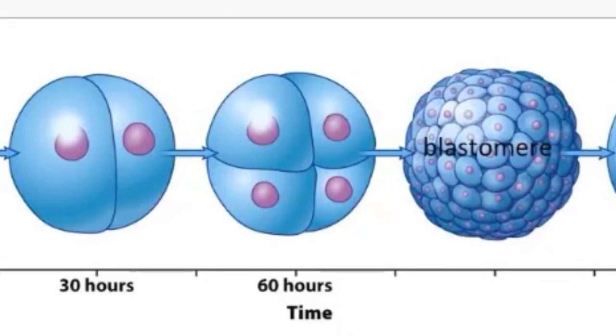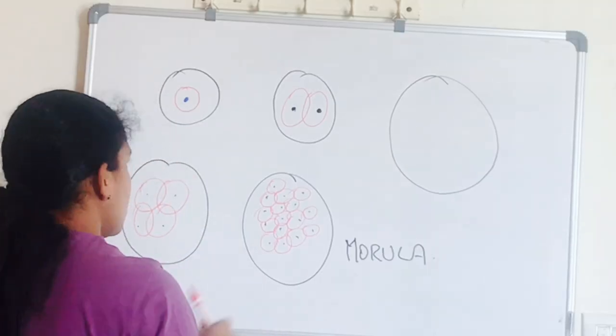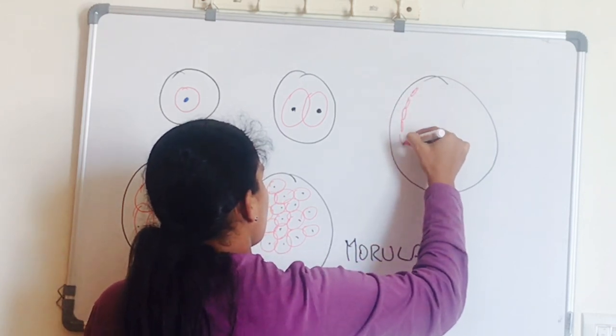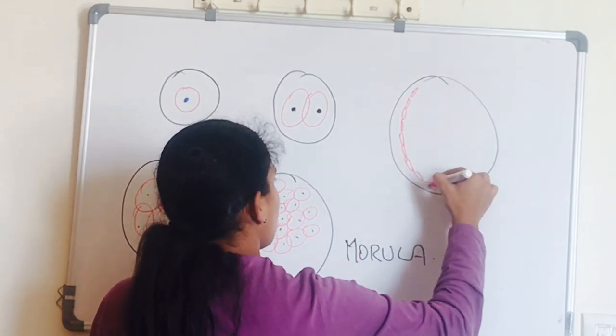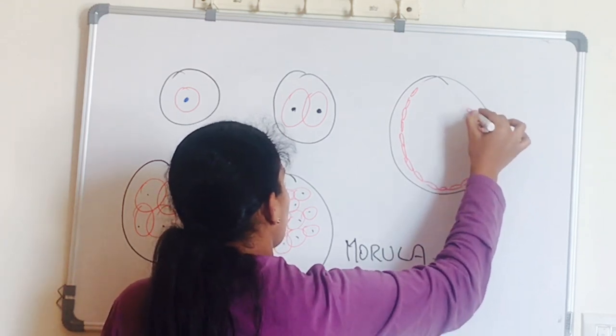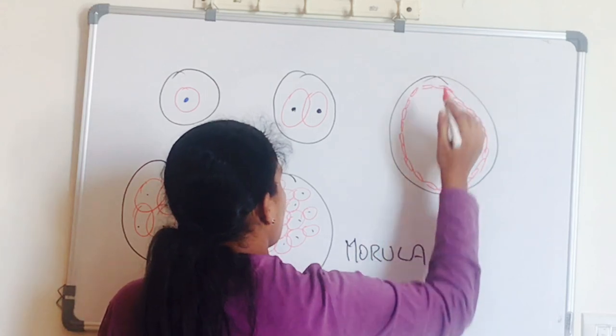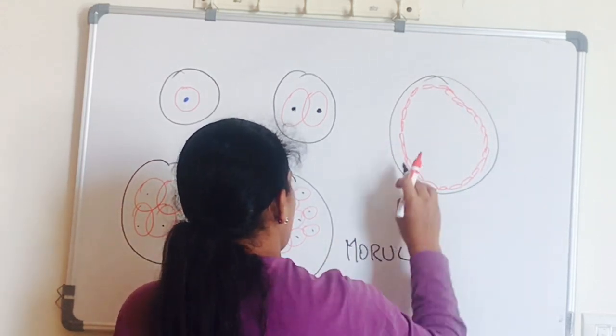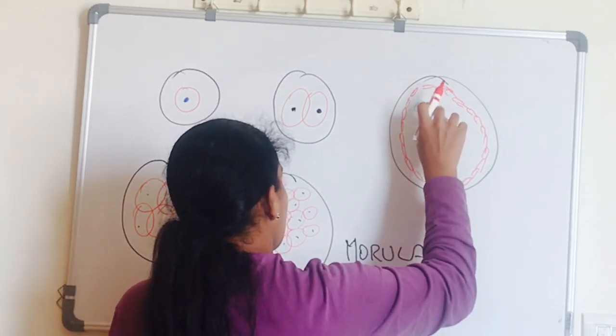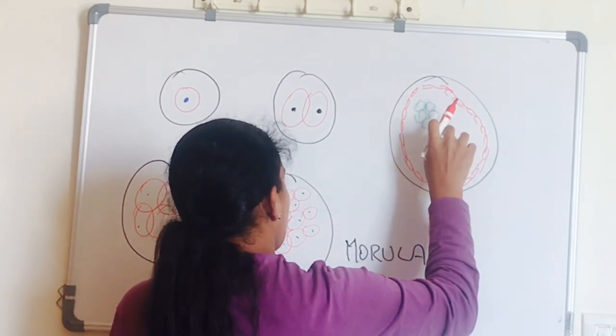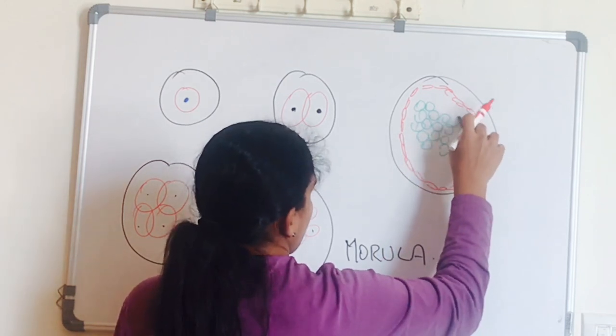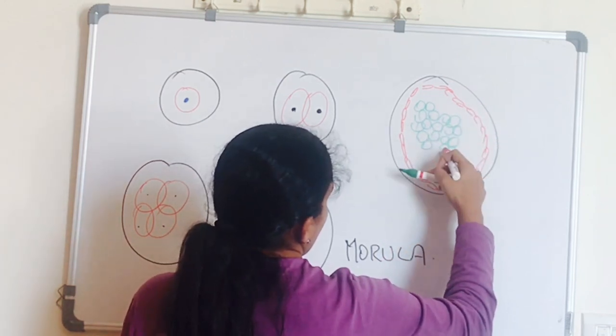So here is the morula stage which is called blastomere, and when you take a cut section across the morula, we can see a layer of outer cells, outer cell mass, and few inner cells called inner cell mass. And this outer cell mass is called trophoblast and inner cell mass is embryoblast.